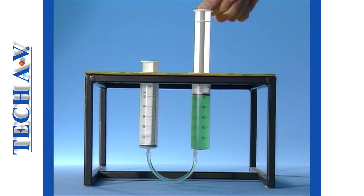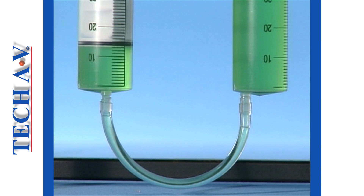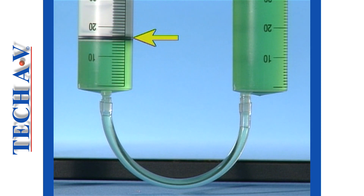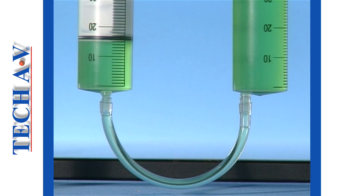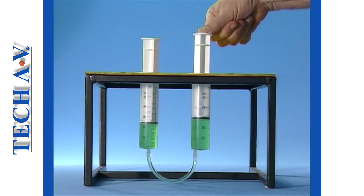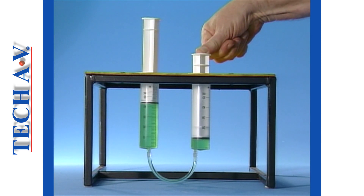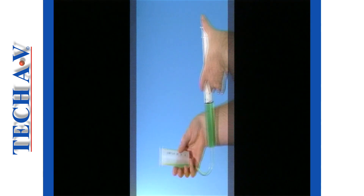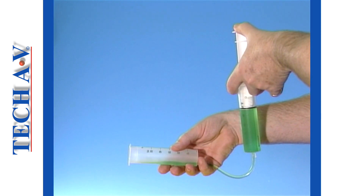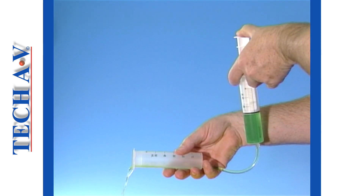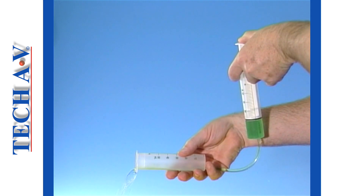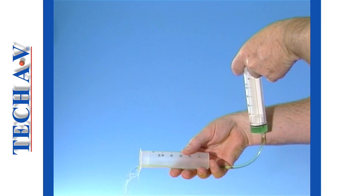This flow of liquid is restricted by the plunger in the opposite syringe. As a result, pressure builds up in the liquid, acting equally upon all surfaces in the liquid line, including the surface of the second plunger. The pressure acting on the plunger results in its movement. If there were no restriction to the flow — that is, if there were no plunger in the second syringe — liquid would simply flow out of the syringe.